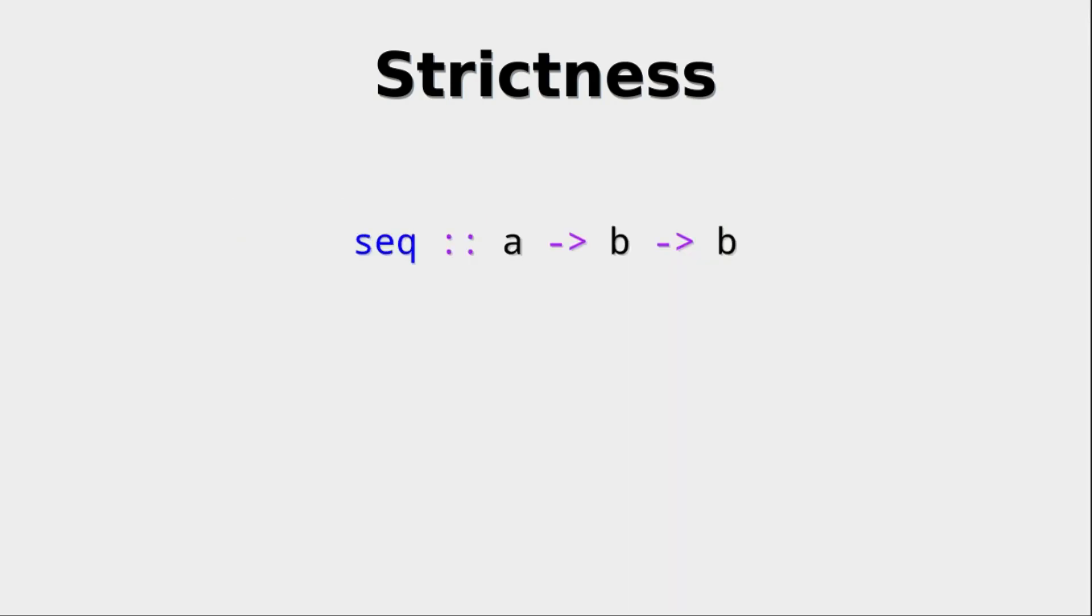Now, how does that work? And how is foldL prime built? Well, there is a very special function within Haskell called seq, which from its type signature looks a bit weird. And if we look at its sort of formal definition, it is still very weird. What is this function?